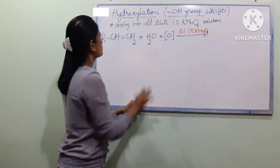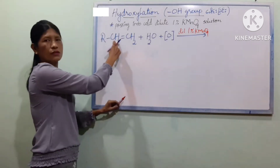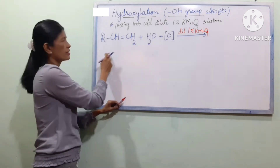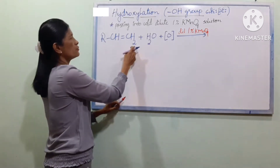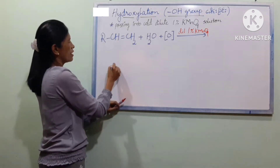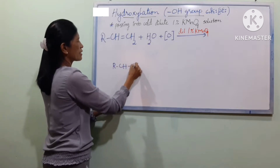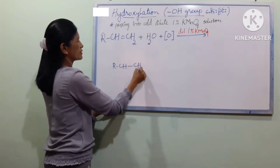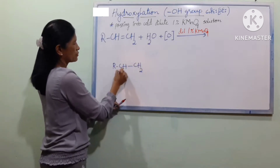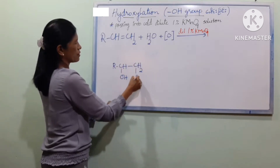The product contains RCH(OH) and CH2OH groups. You should be using OH groups — OH and OH.